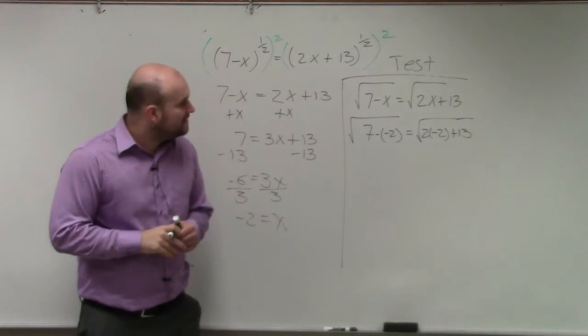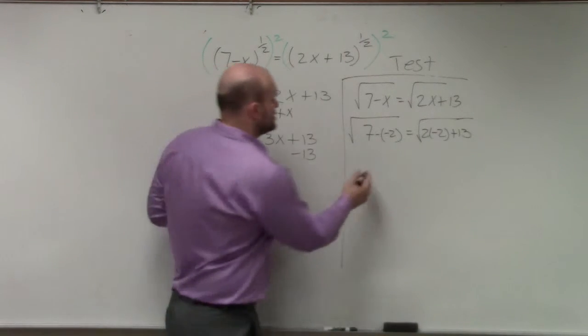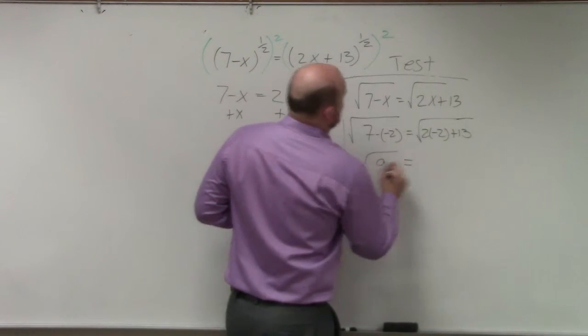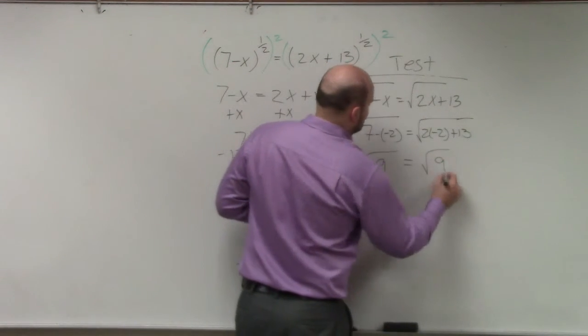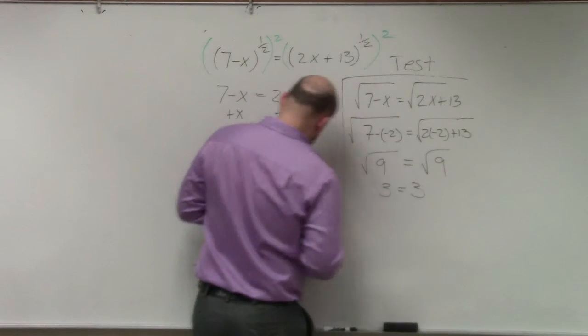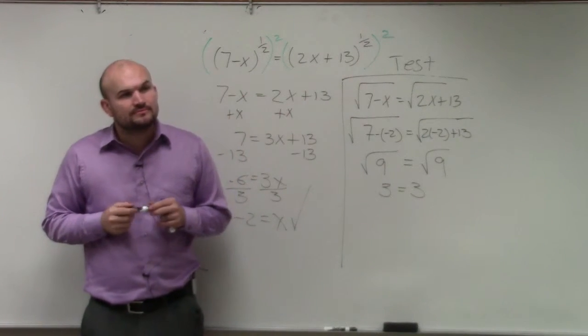So let's see what we get. 7 minus negative 2 is going to be 7 plus 2, which is the same thing as 9. 2 times negative 2 is negative 4. 13 plus negative 4 is 9. So therefore, it's verified. There is no extraneous solution, OK?